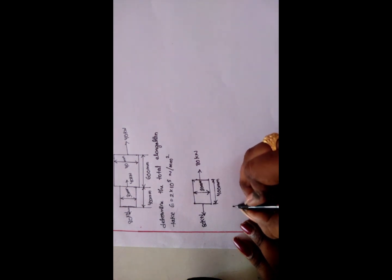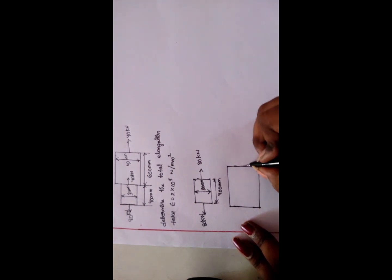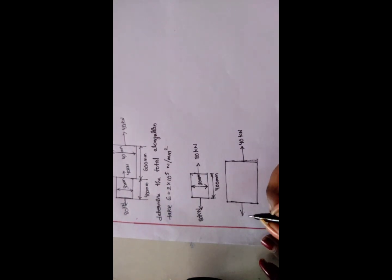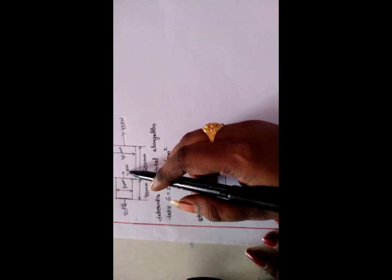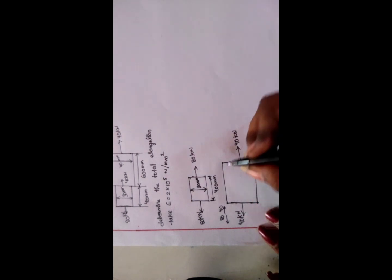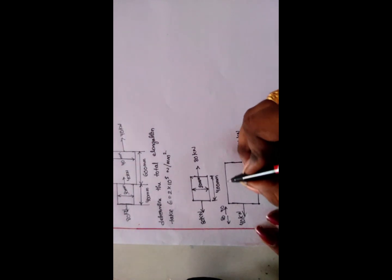At this section, each side is 40 kN. 80 minus 40 at this section is 40 kN. This is 40 mm diameter with a length of 600 mm.